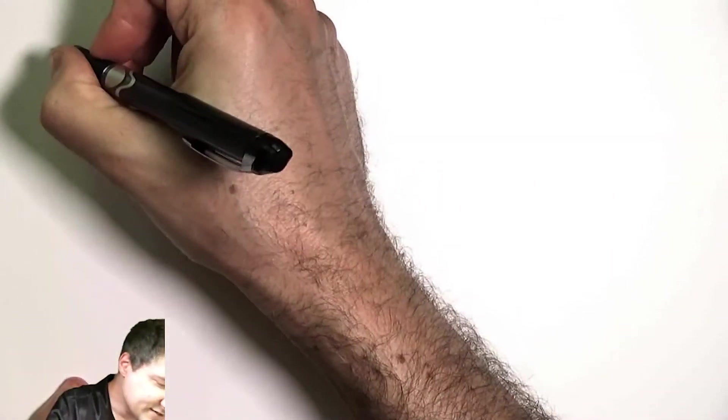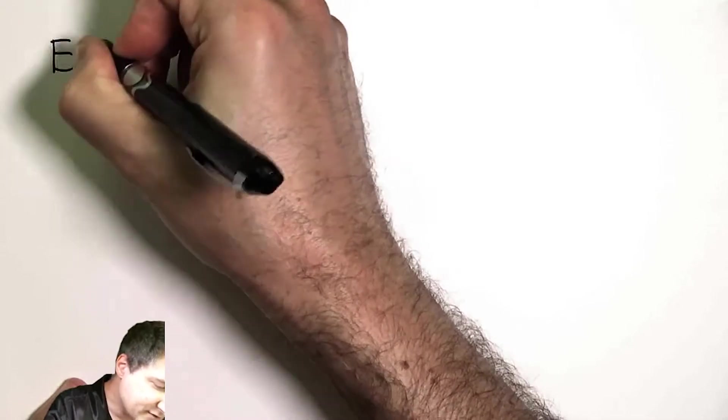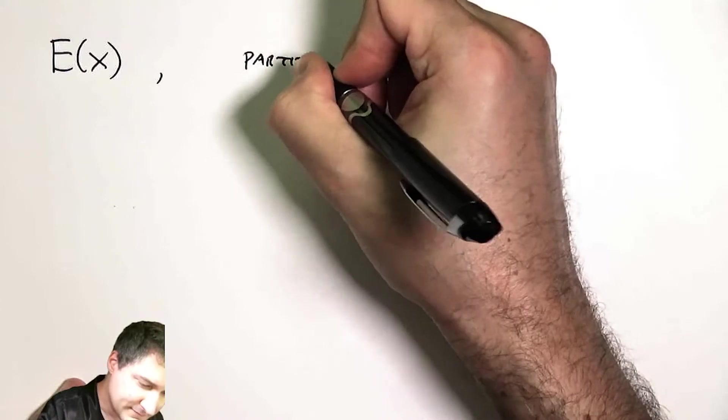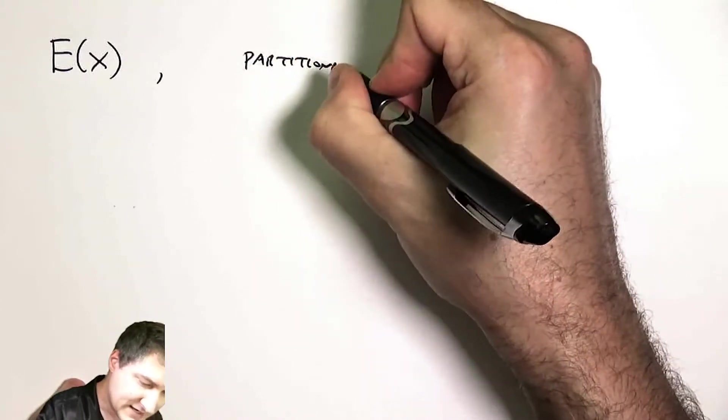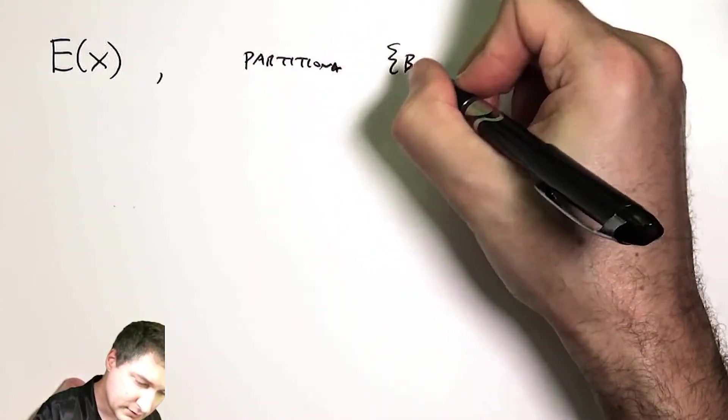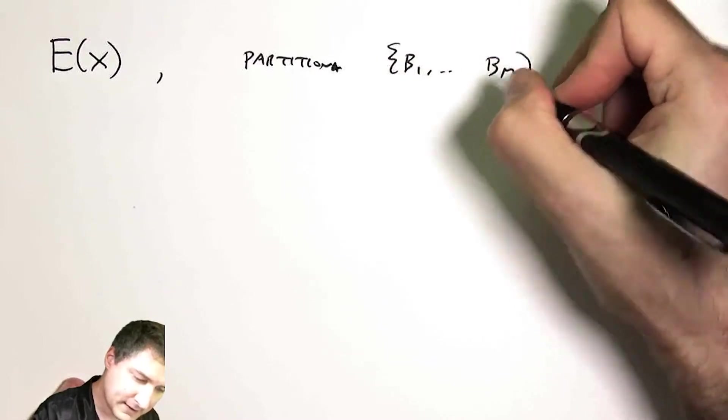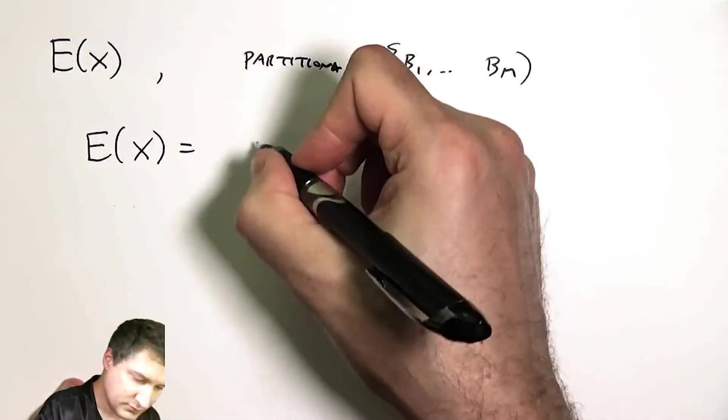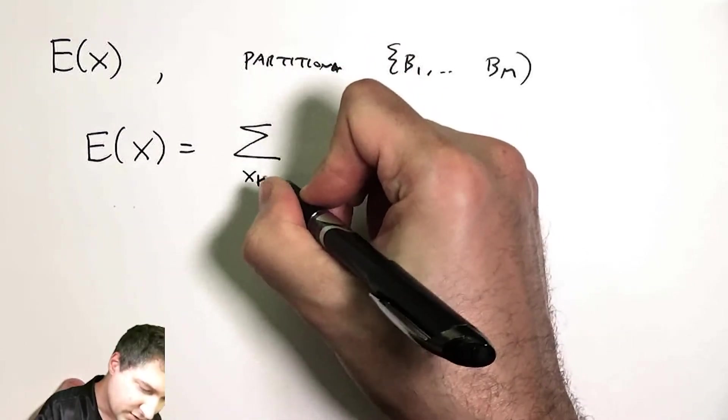And so one very handy thing to know in this area is if I want to compute the expected value of x, and I've got a partition of the sample space b1 through bm, well, the expected value of x is equal to, well, I can write, here are all my possible outcomes.